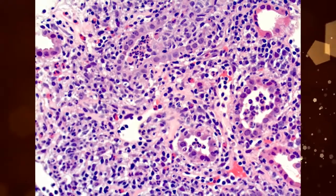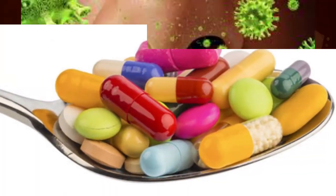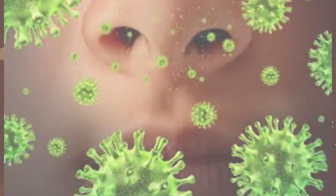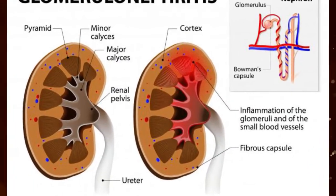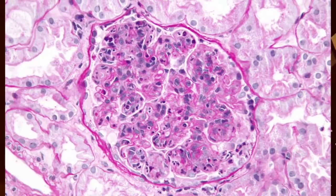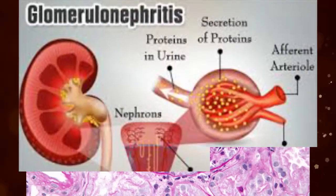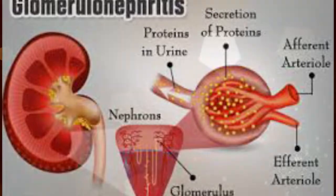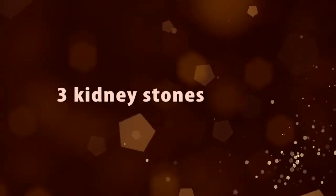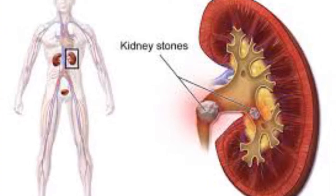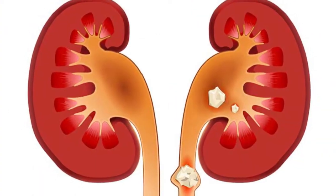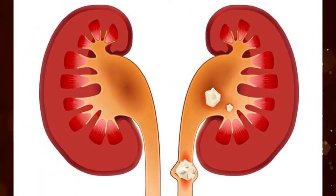Glomerulonephritis is another kidney disease that sometimes causes red blood cells in the urine and can lead to acute or chronic kidney failure. Kidney stones: A kidney stone is another possible culprit that often causes visible blood in the urine. The blood is typically due to scraping of the urinary tract structures as the stone moves through them.